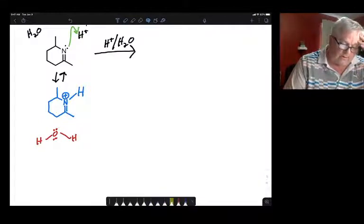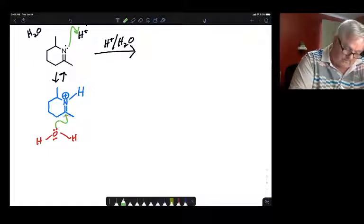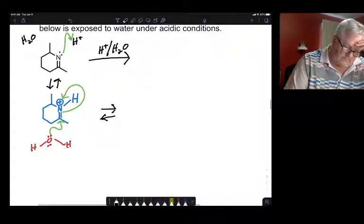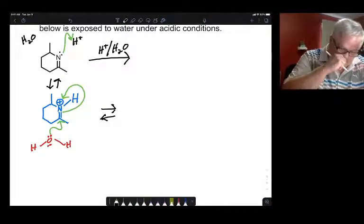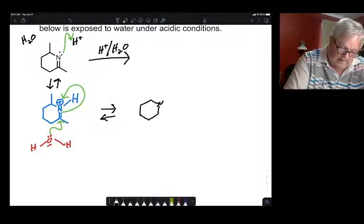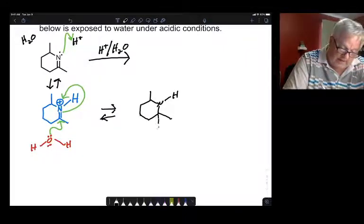So what we're going to do now is just react our water by attacking. So we have our nitrogen in the six-membered ring. There's the ring that we had. We have a hydrogen there. We no longer have that positive charge there. We've also added water.